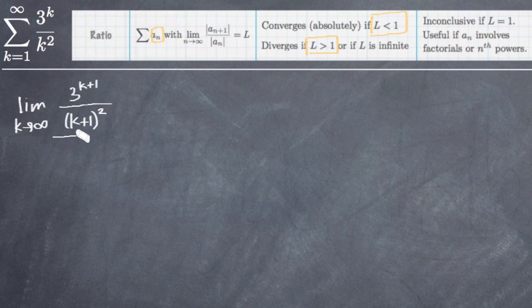We're going to divide this entire function by the original function, so 3^k divided by k squared. And now it's just a matter of simplifying this and then finding the limit as k goes to infinity.